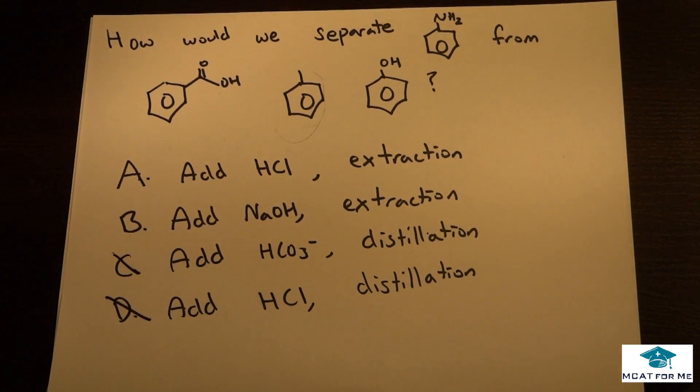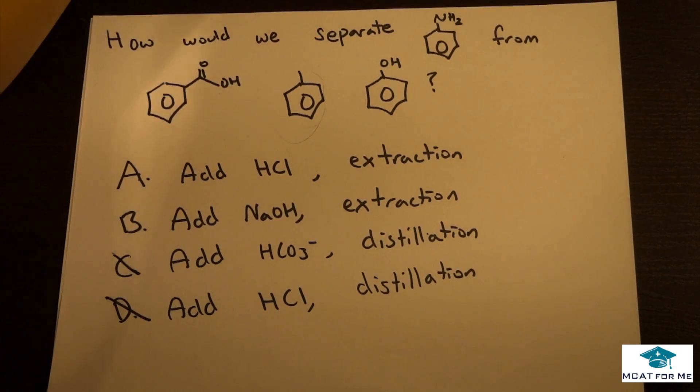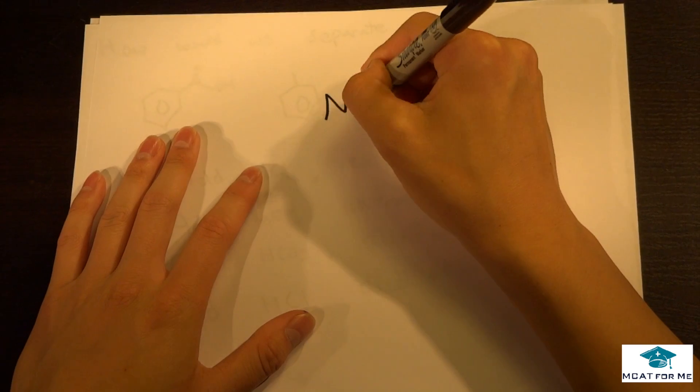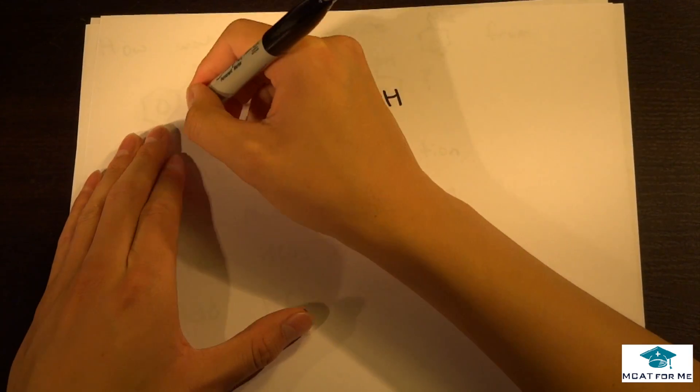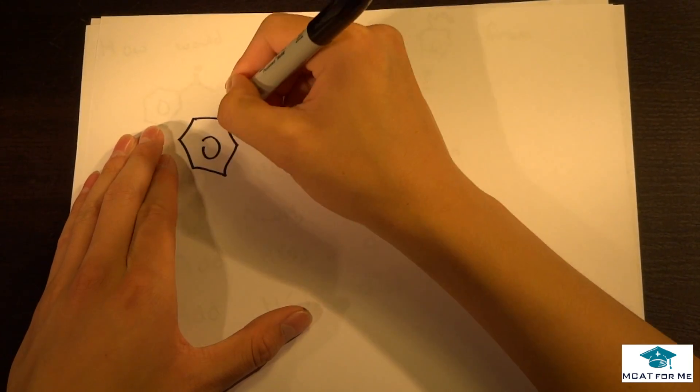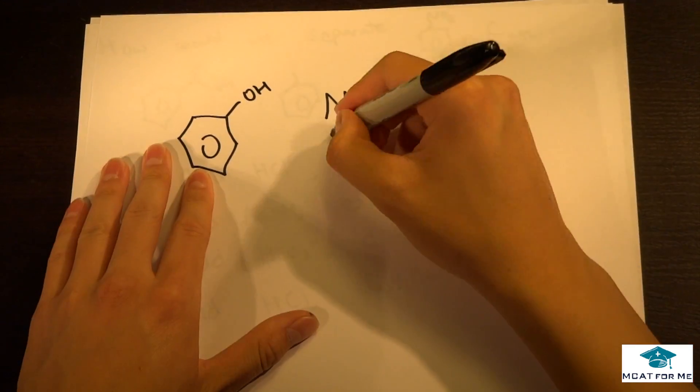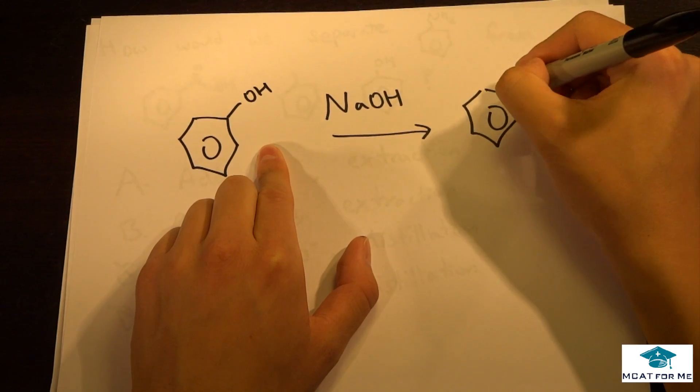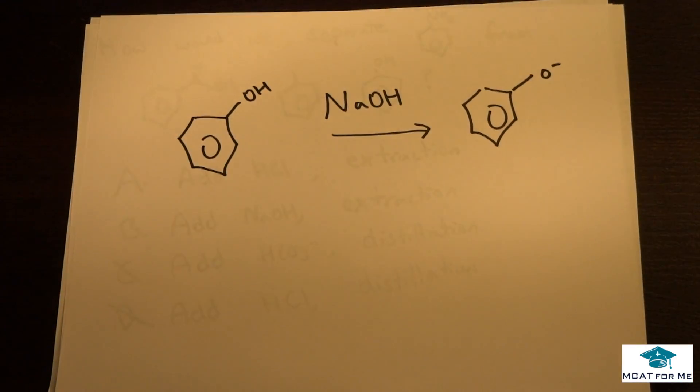So between HCl and NaOH, which would do the trick? So how do we do that? So if we add NaOH to something, and let's take phenol for example. If we add NaOH, it's a base, it's going to deprotonate that. Simple deprotonation.